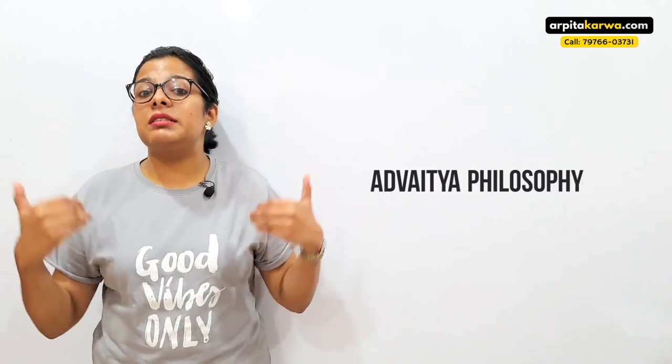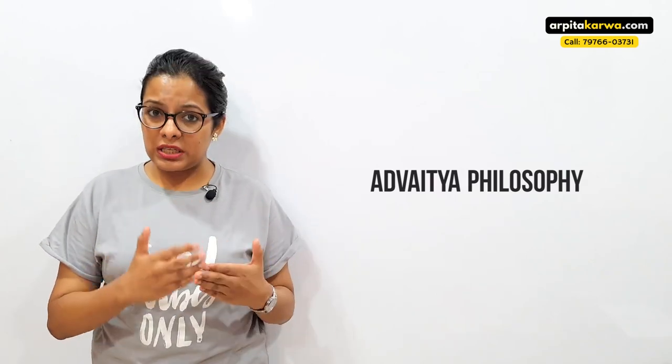According to the Advaita philosophy, Pramanas are of six types — six different ways we acquire knowledge and learn so many things about our world. We are going to look at all six types of Pramanas and see how each of them are different as well as a bit similar to the others.